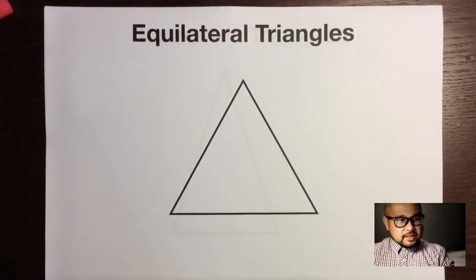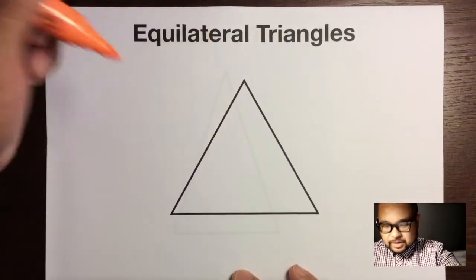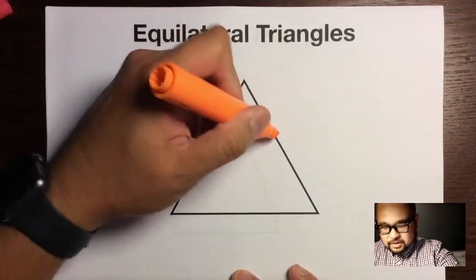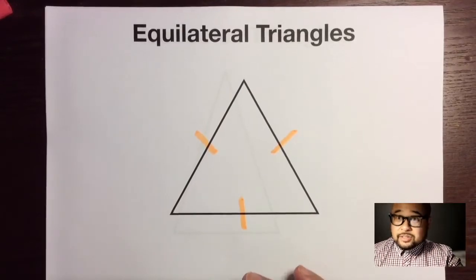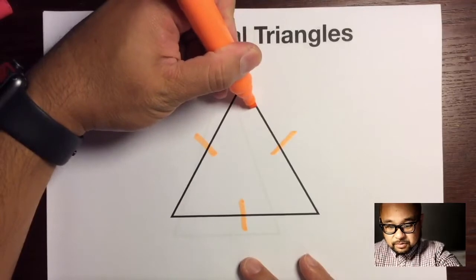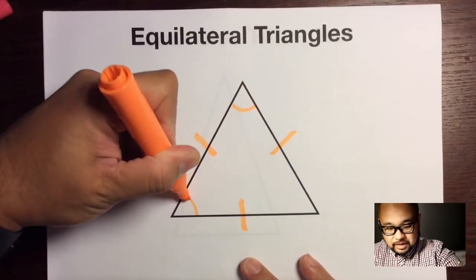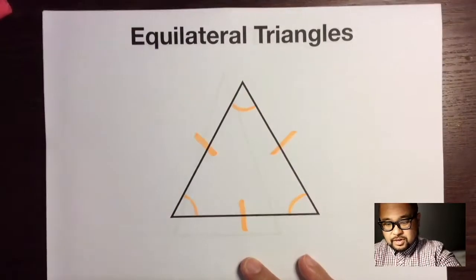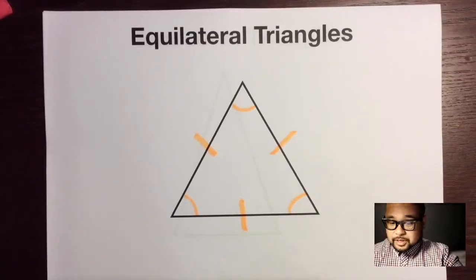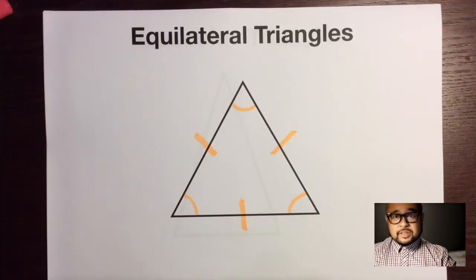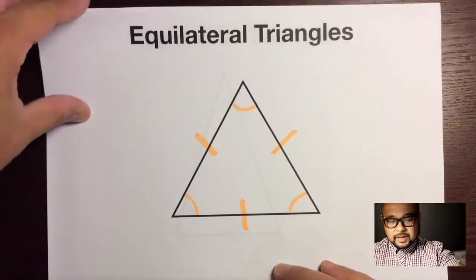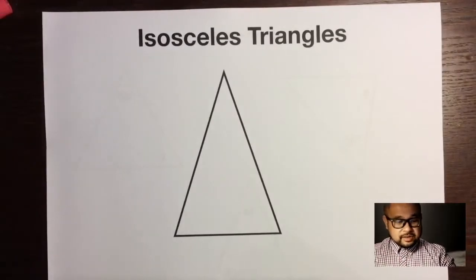Draw an equilateral triangle and take a highlighter. We know that it's equilateral — all sides are congruent — so let's put a tick mark, tick mark, and tick mark. I also told you in the previous episode that if it's equilateral it is also equiangular, so all three angles are the exact same measure. That's true for triangles, though not necessarily for other shapes.